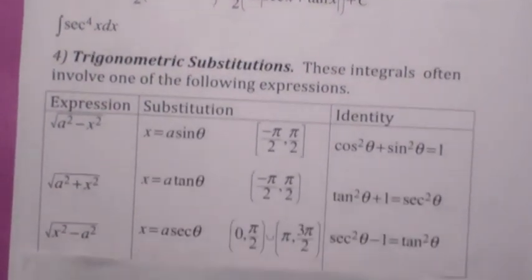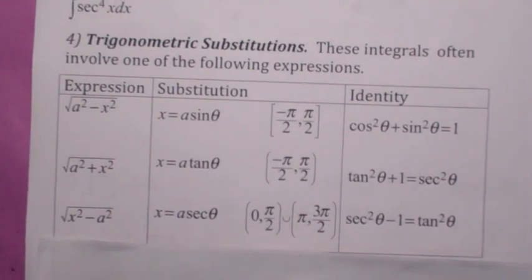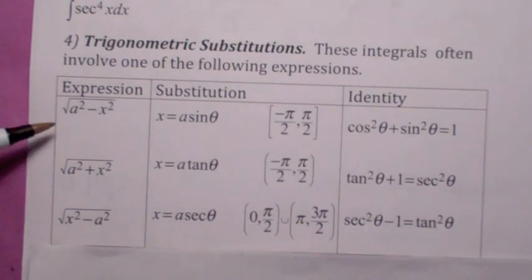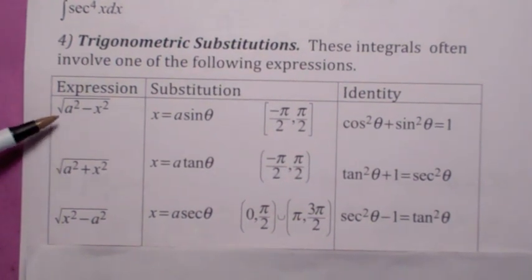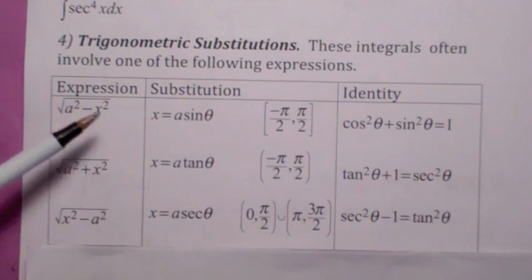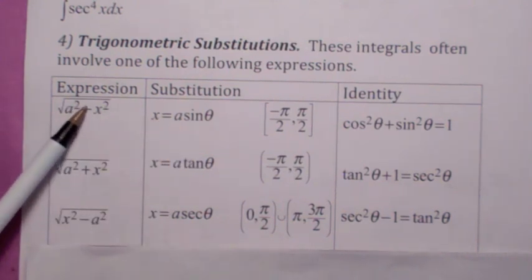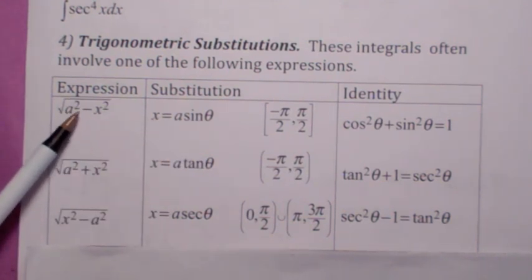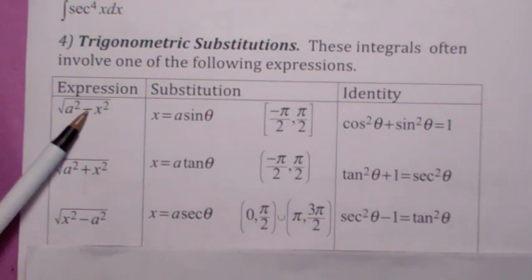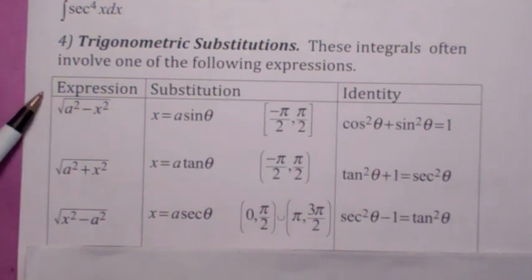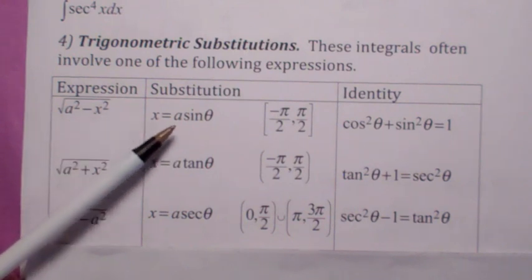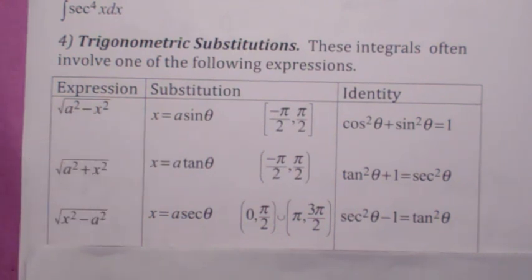Trig substitutions. That's a pretty useful technique. Remember, the easy way to remember when to do what is look at what helps you. If you let x equal a sine theta, inside the square root, you're going to get one minus sine squared, which is going to turn into a cosine squared, so it allows you to get rid of the square root. You always use the substitution that allows you to get rid of the square root.